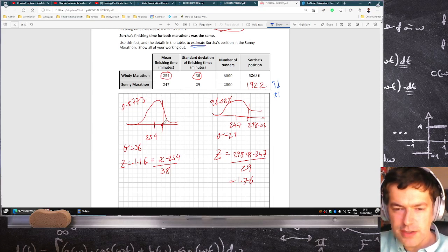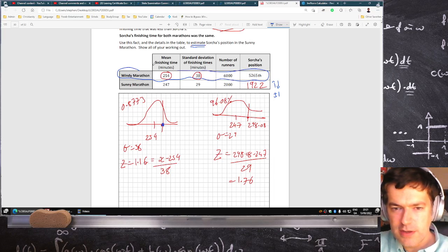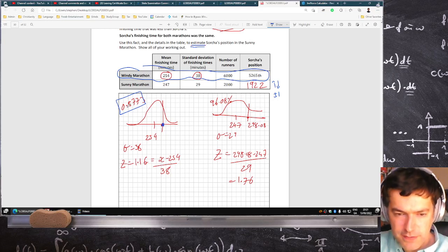And the idea for this question was, you calculate her time using the first race, the windy one, so you convert her position into an area, a probability. 87% of people had a smaller time than her, and you get the Z score for that. Oh, sorry, you know the Z score for that is 1.16 from the table book, so then you can work out the X. The X worked out to be 298.08.